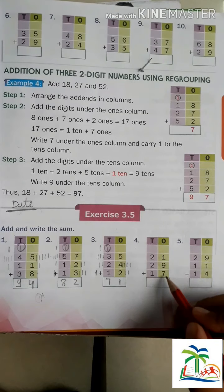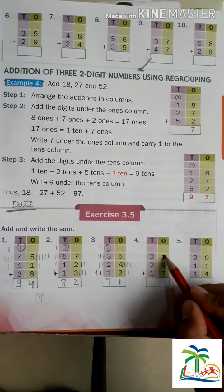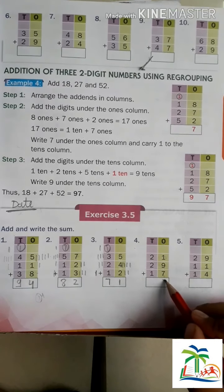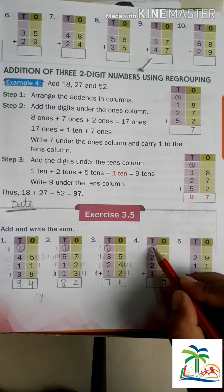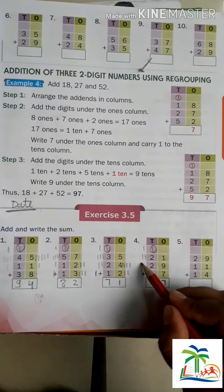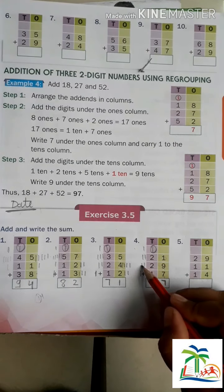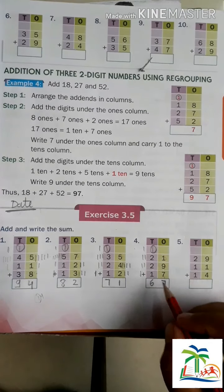9, 1, 7. 9 plus 1 is 10. What comes just after 9? 10. 9 plus 1 is 10. 10 plus 7 is 17. Write down 7 here and 1 here. Now add tens numbers: 1, 1, 2, 1, 2, 1, 1, 2, 3, 4, 5, 6. Write down 6 here. What we get here? 67.